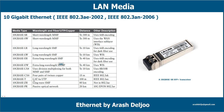10GBase-T uses Cat6A UTP for up to 100 meters, defined in IEEE 802.3AN. 10GBase-ZR uses long-wave SMF for up to 80 kilometers. 10GBase-PR is a passive optical network standard supporting 20 kilometers, defined in IEEE 802.3AV. The WAN Interface Sub-layer (WIS) is used to interoperate with SONET STS-192C transmission format. We should be aware of these standards without needing to memorize every detail.